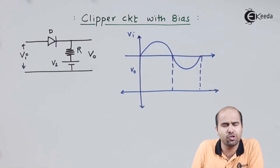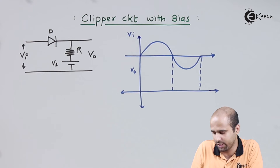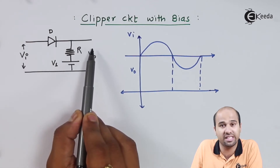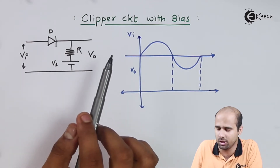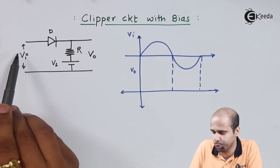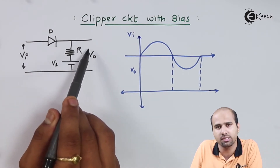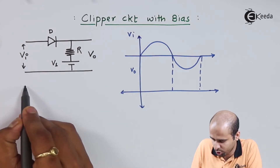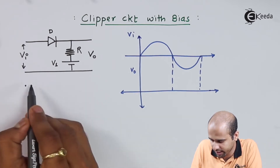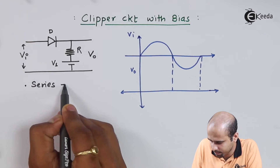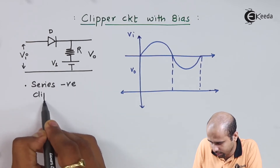See this circuit. First of all we will have to identify this particular circuit. In this particular circuit, the diode is in between input and output in series, so it is nothing but a series clipper. More than that, the diode is oriented from input towards the output side, so it is nothing but the negative series clipper. So this circuit is a series negative clipper.